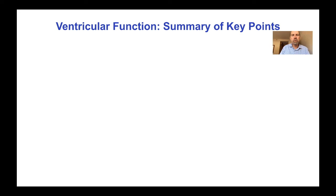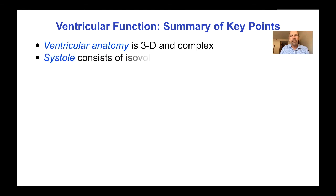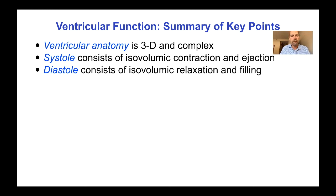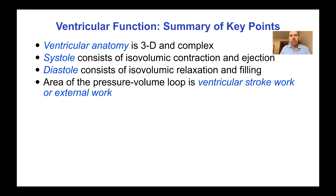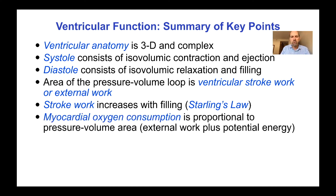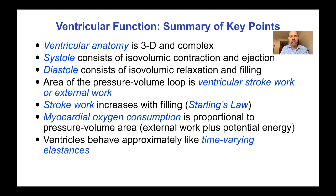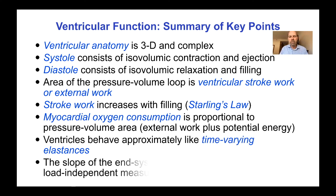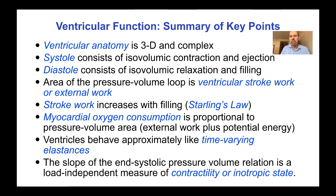In summary, in this lecture on ventricular function we've seen that ventricular anatomy is three-dimensional and complex; that systole consists of isovolumic contraction and ejection phases while diastole consists of isovolumic relaxation and filling phases. The area of the pressure-volume loop is the ventricular stroke work or external work, and stroke work increases with filling — this is Starling's law or the Frank-Starling mechanism. Myocardial oxygen consumption is proportional to pressure-volume area, which is the external work plus the potential energy, and the ventricles behave approximately like time-varying elastances. The slope of the end-systolic pressure-volume relation — Emax — is a load-independent measure of contractility or inotropic state. Next time we'll talk about the structure and mechanics of cardiac muscle.